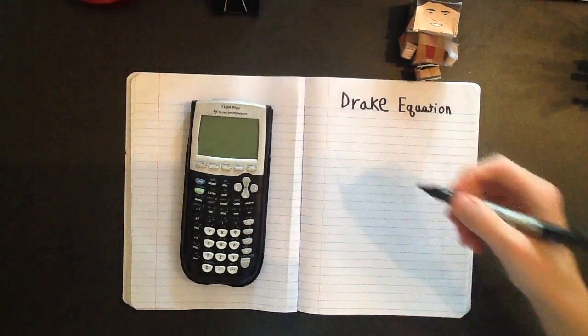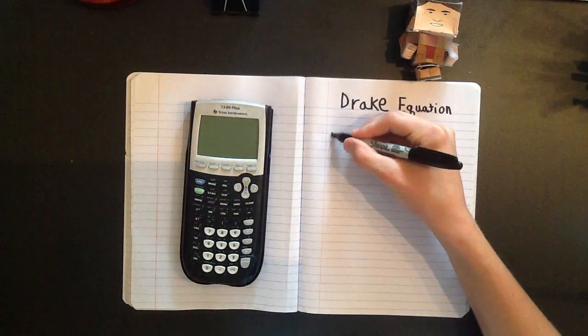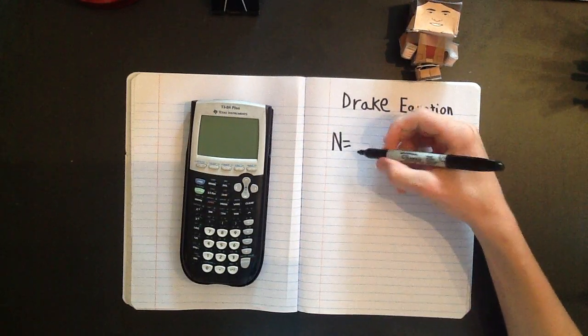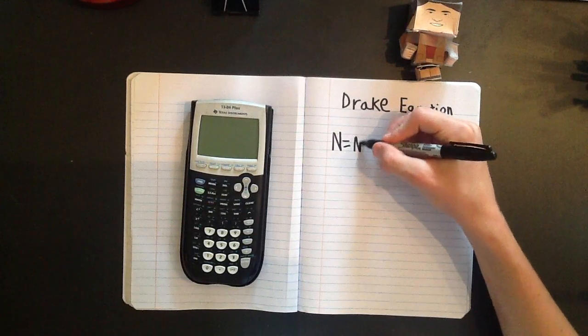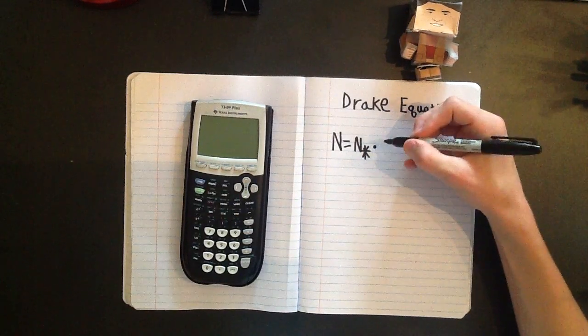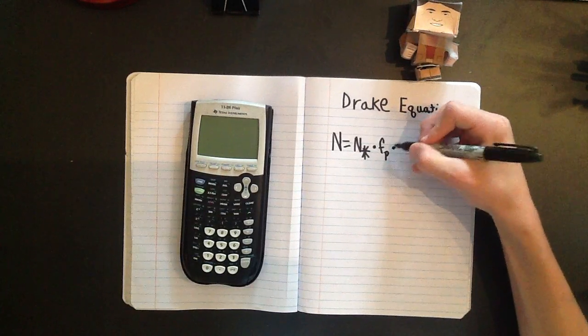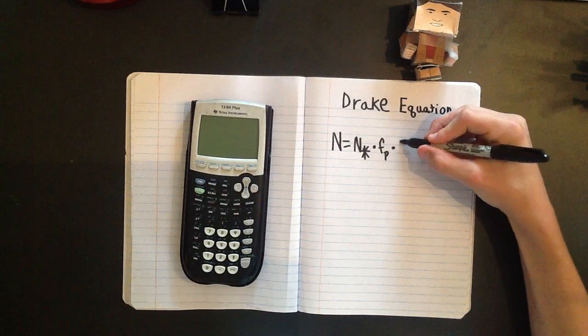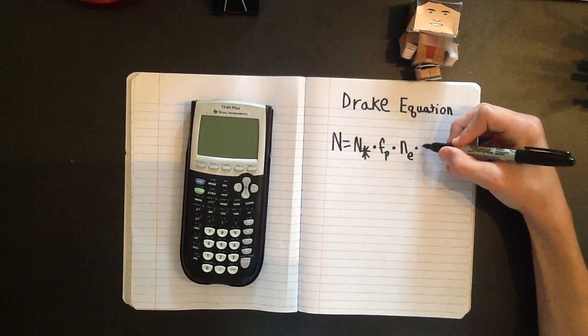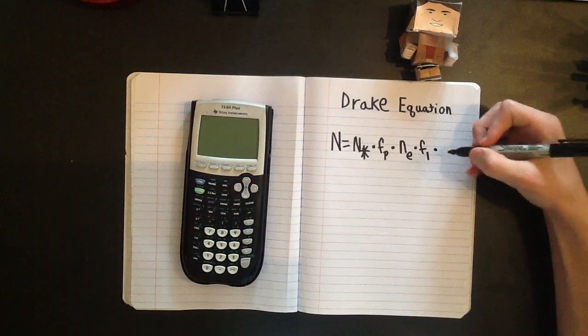And so the Drake Equation is the number of civilizations, so N, equals N sub star times F sub P times N sub E times F sub lowercase L times F sub I.